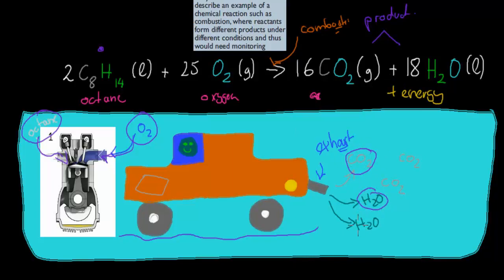Carbon dioxide itself is not super good for the environment — it causes or contributes to global warming — but it's still better than some of the other ones. Water itself is obviously relatively harmless. So in this case, whilst it would still pollute the environment, it wouldn't be super bad because carbon dioxide isn't a super pollutant. The reason I mention this is the learning objective says: describe an example of a chemical reaction such as combustion, where reactants form different products under different conditions, and thus would need monitoring.